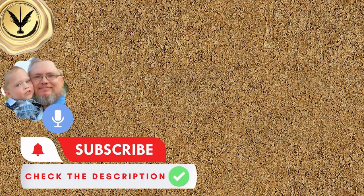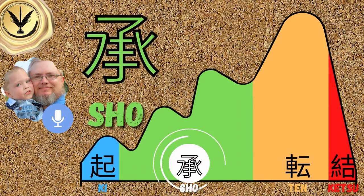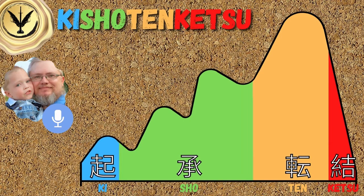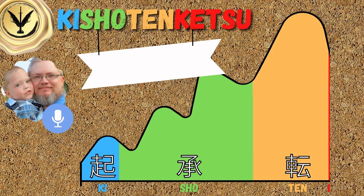Welcome back. In my last videos I gave you a brief overview of the Kishoten Ketsu or Japanese 4X structure and dove deeper into some of the particulars of the style. Today I'll give you a few examples from some popular anime. I'll also show you how Kishoten Ketsu can be weaved into a Western three-act framework with your secondary characters. Let's get into it.